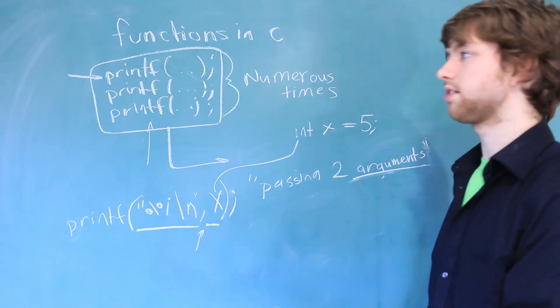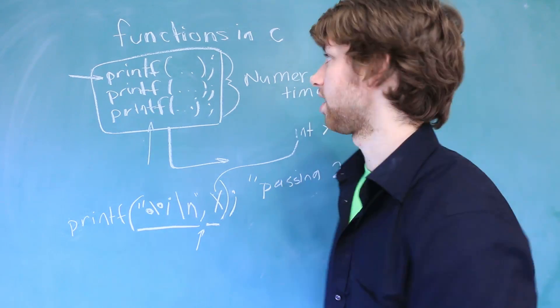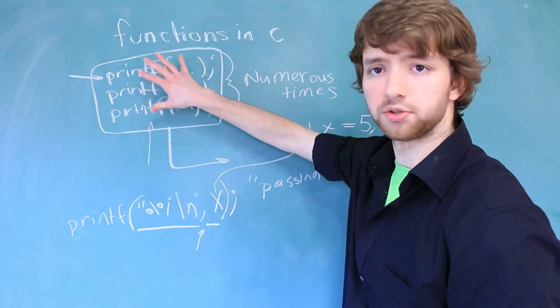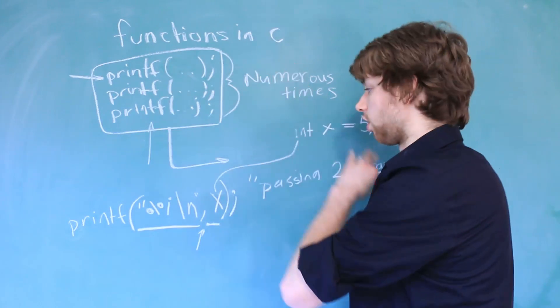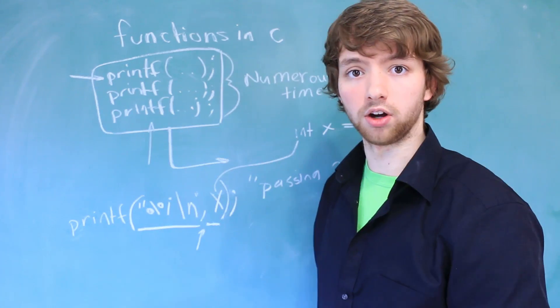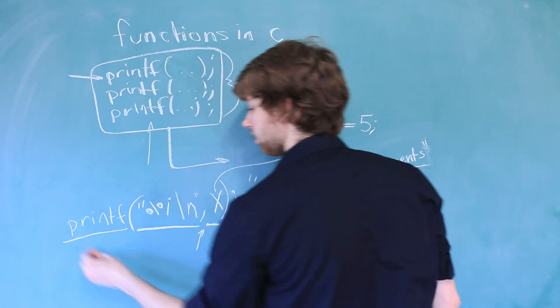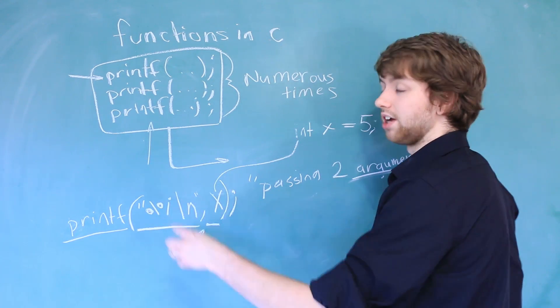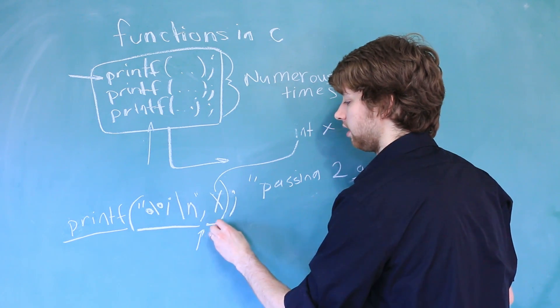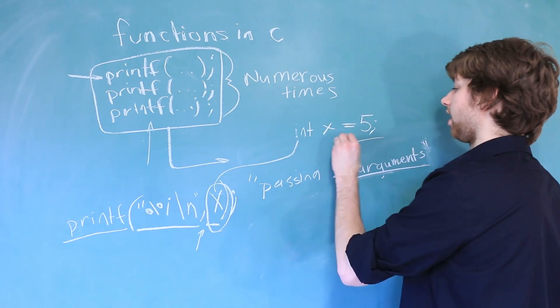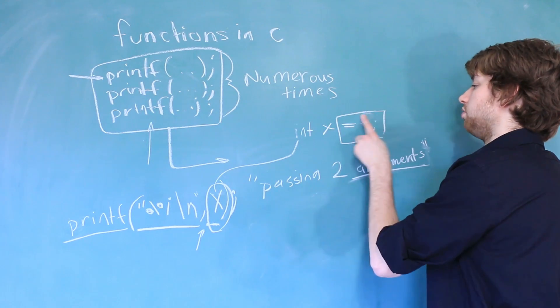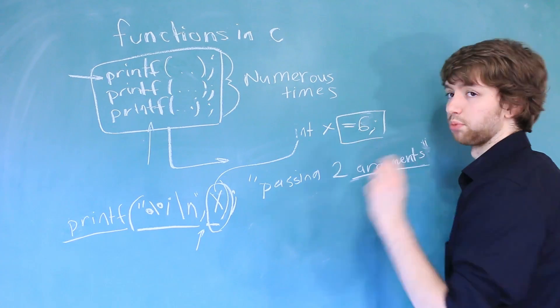Arguments allow us to customize our functions. For example, in this situation where we had this function we created called console dump, we could accept arguments that allow us to change how the function works. You can see that in the printf function. The printf function does something different depending upon what we pass in. If we're passing in x here and it has the value of 5, it's going to print 5 to the console. But if x has the value of 6, it's going to print 6.